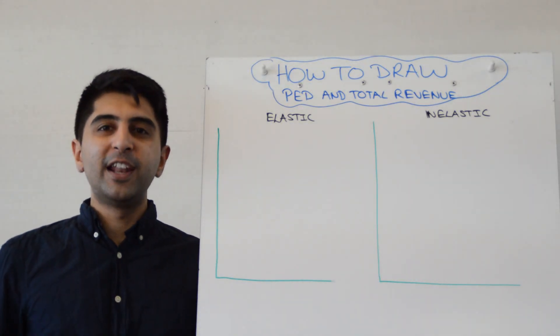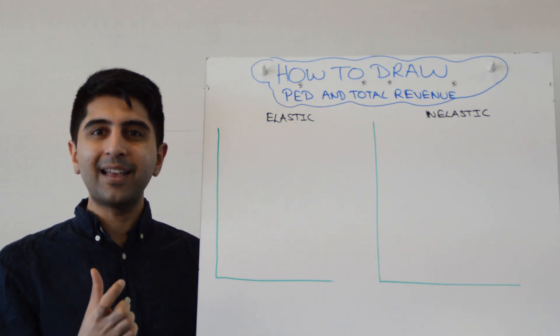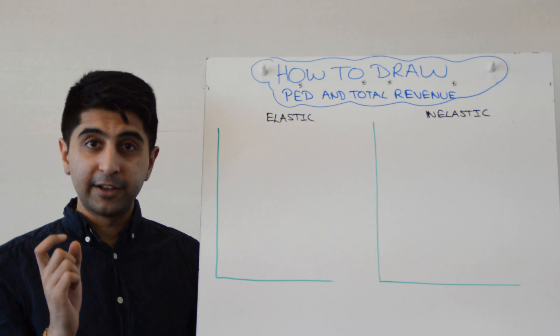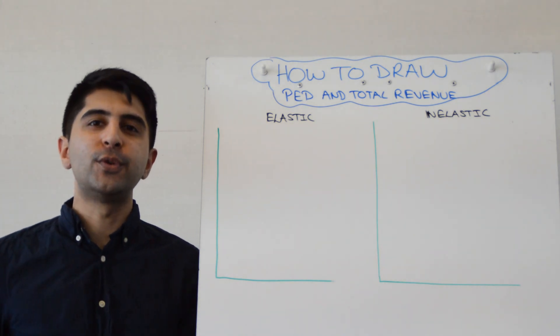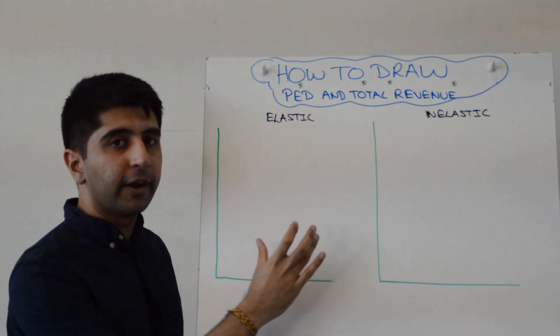Hi everybody! You want to illustrate the relationship between the price elasticity of demand for a product and total revenue for a business. How do you do that diagrammatically? Well, you need to draw two diagrams.